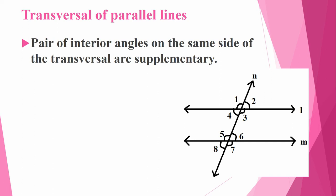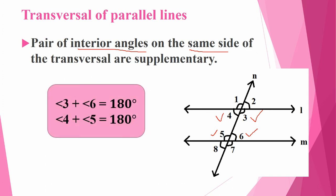If two parallel lines are cut by a transversal, each pair of alternative interior angles are equal. Interior angles are 3, 4, 5, and 6. Alternative means opposite — for angle 3, opposite is angle 5, so angle 3 equals angle 5. Angle 4 equals angle 6. Also, pair of interior angles on the same side of the transversal are supplementary — meaning if you add them, they come to 180 degrees. So angle 3 plus angle 6 equals 180, and angle 4 plus angle 5 equals 180. These three special properties are there for parallel lines.